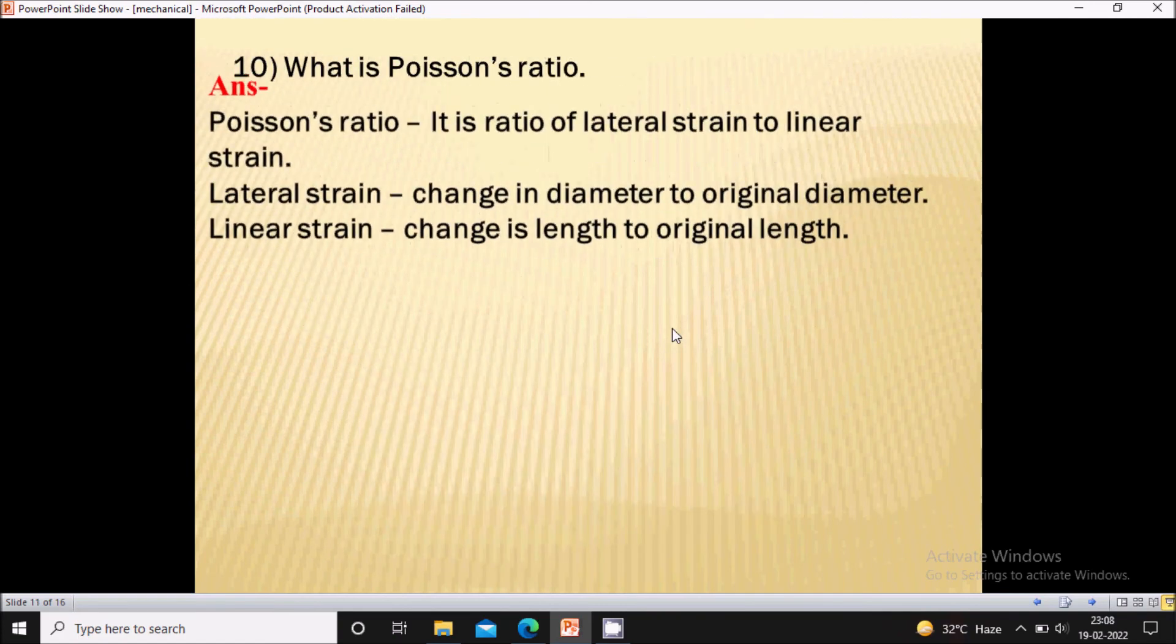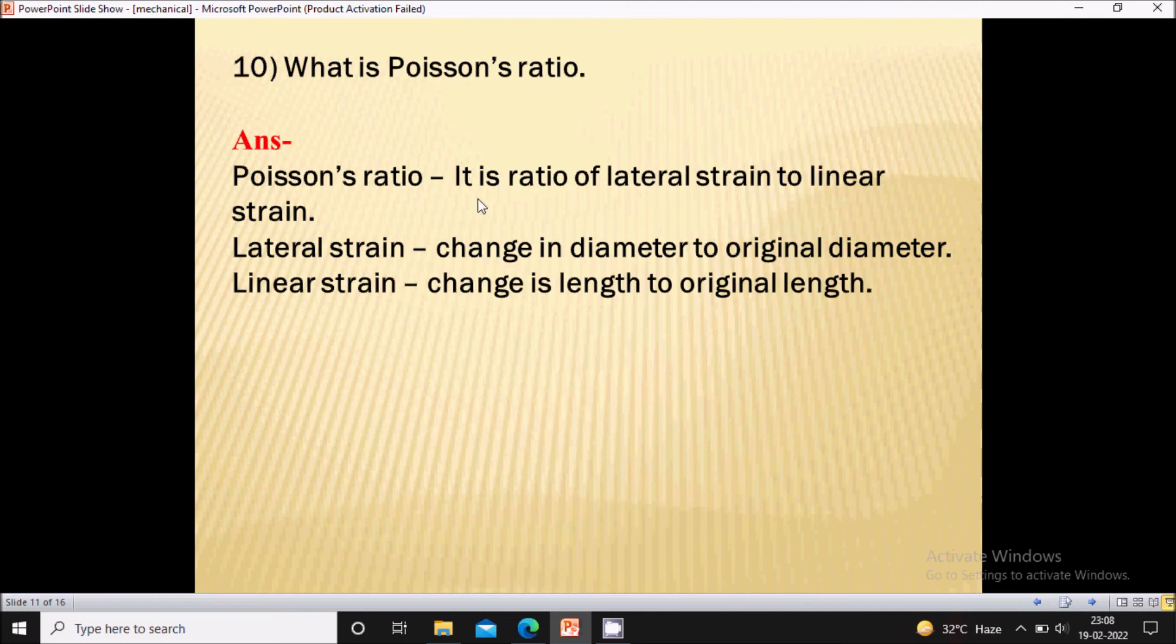What is a poisons ratio? So here poison ratio, it is a ratio of lateral strain to linear strain. Here lateral strain is nothing but change in diameter to original diameter. While linear strain is change in length to original length.